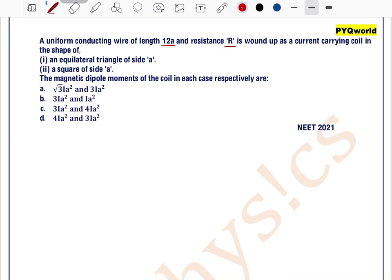The magnitude of dipole moment in each case respectively are - we know that magnitude of magnetic dipole moment can be written as NIA where N is number of turns, I is current, and A is cross sectional area.